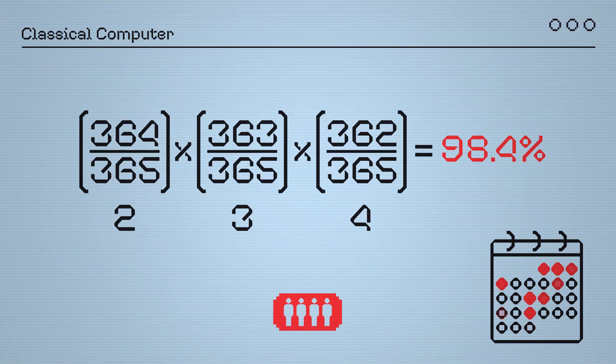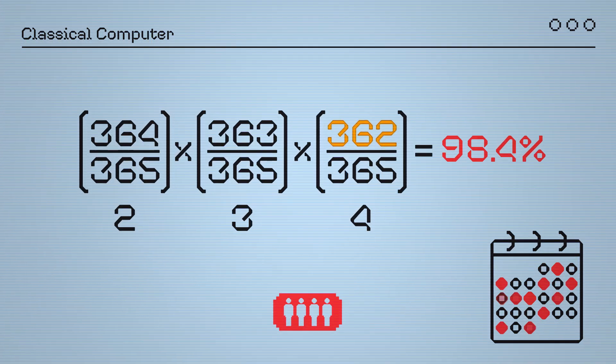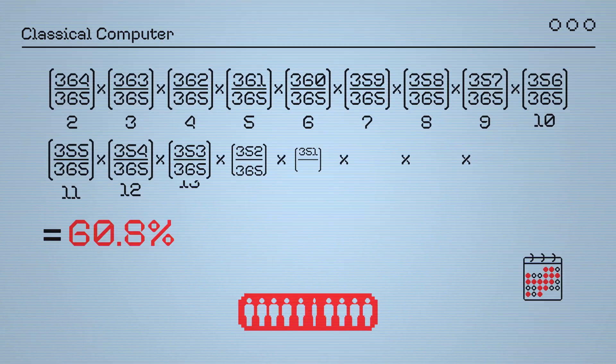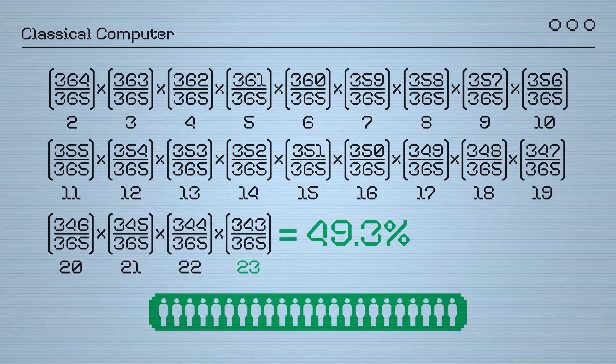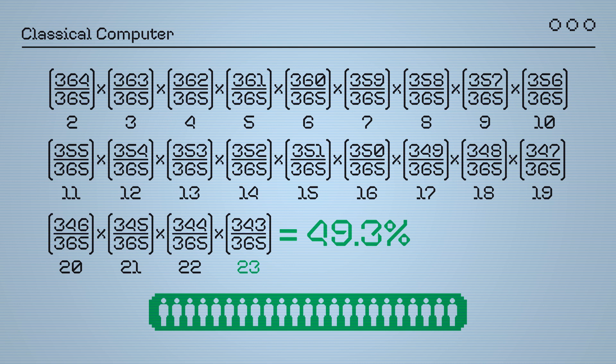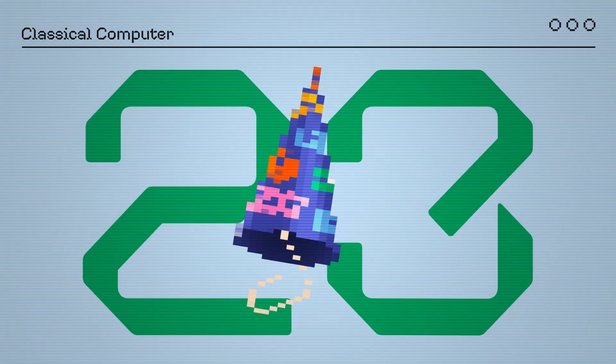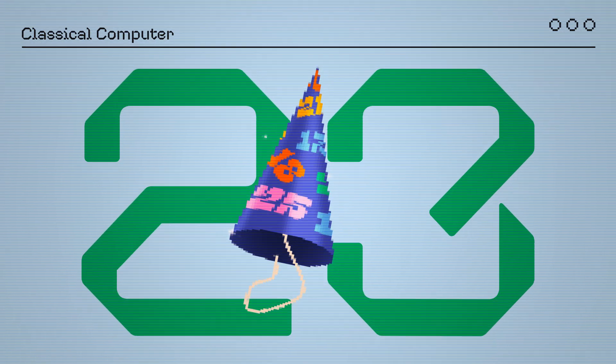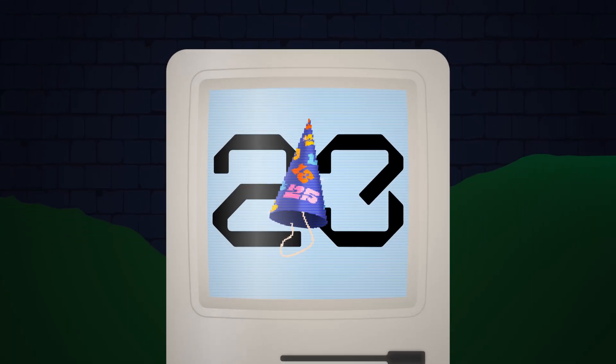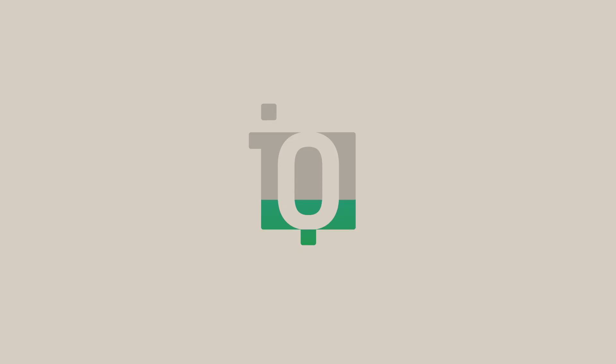When a fourth person enters, there are only 362 possible dates left. And when the 23rd person enters, the probability of not having two people with the same birthday drops below 50%. As such, there is more than a 50% chance that two people have the same birthday. To represent this enigma on a quantum computer, we'll need several quantum gates.